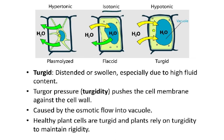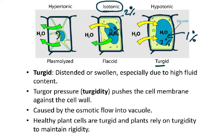Isotonic means the same concentration inside and outside — for example, 2% inside and 2% outside, so it's an isotonic solution. Hypotonic means inside is 2% and outside is 1%, so water will move in and the cell becomes turgid. In a hypertonic solution, inside is 2% and outside is 3%, so water moves from higher water potential to lower water potential, and the cell becomes plasmolyzed.